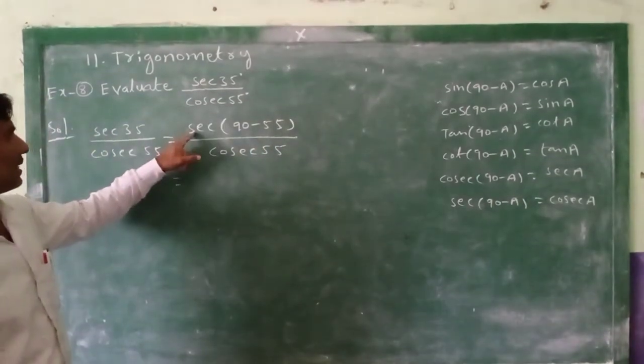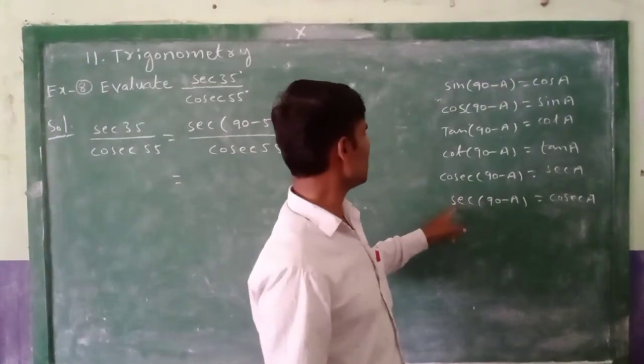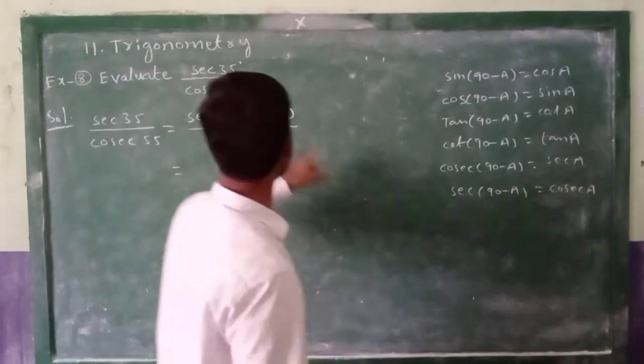Now secant(90-A) means cosecant A. A, which one is there? 55 is there.